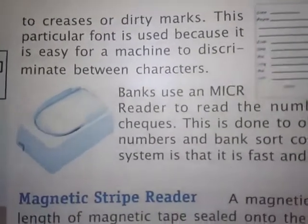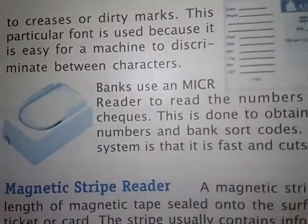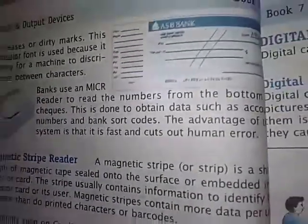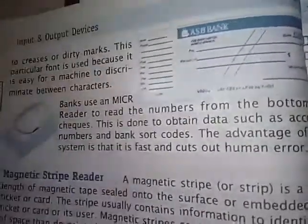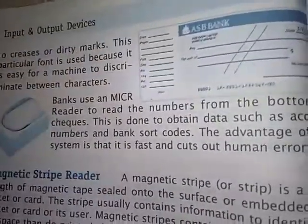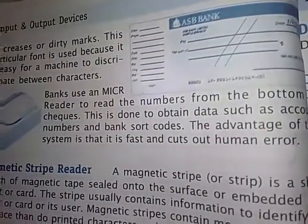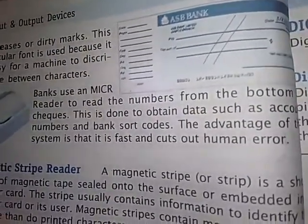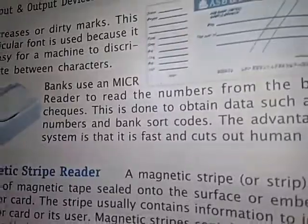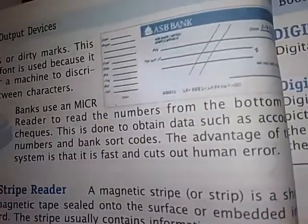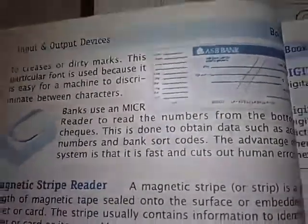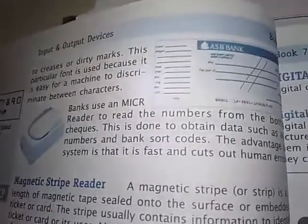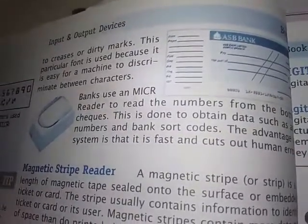Banks use an M-I-C-R reader to read the numbers from the bottom of checks. This is done to obtain data such as account numbers and bank sort codes. The advantage of this system is that it is fast and cuts out human error.